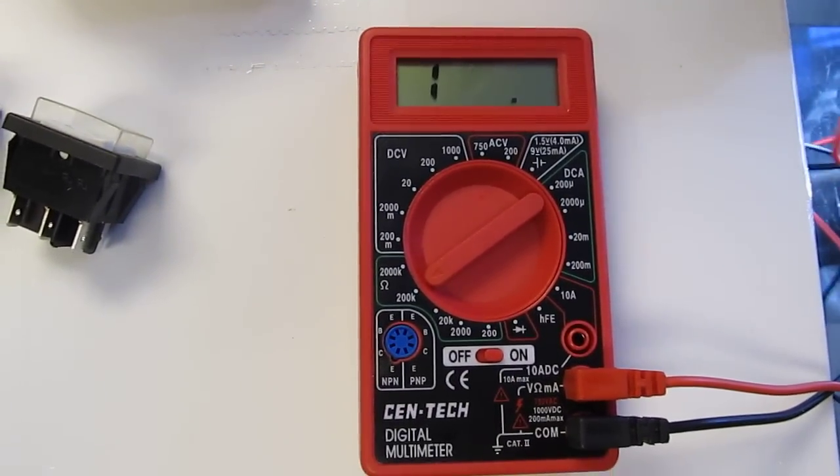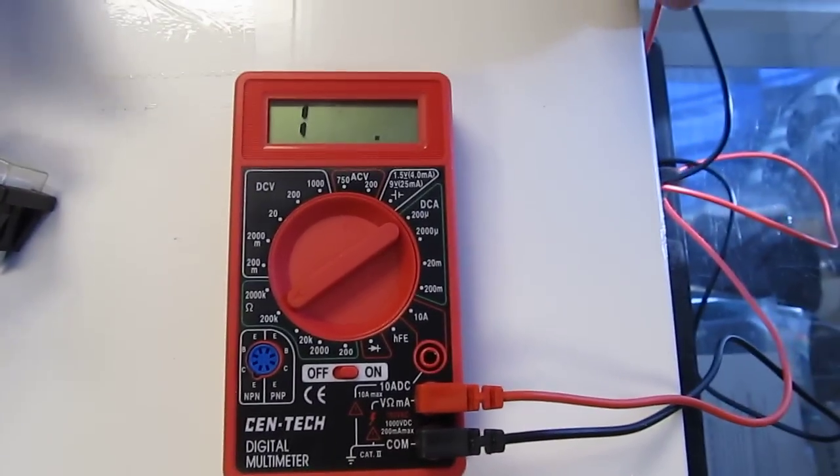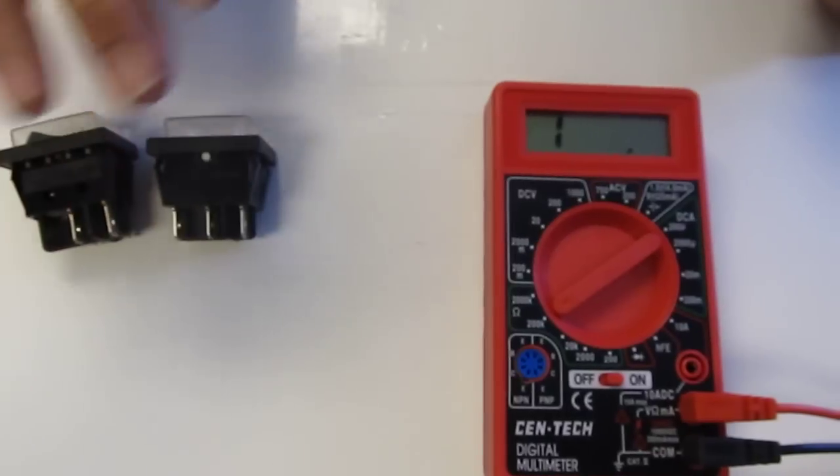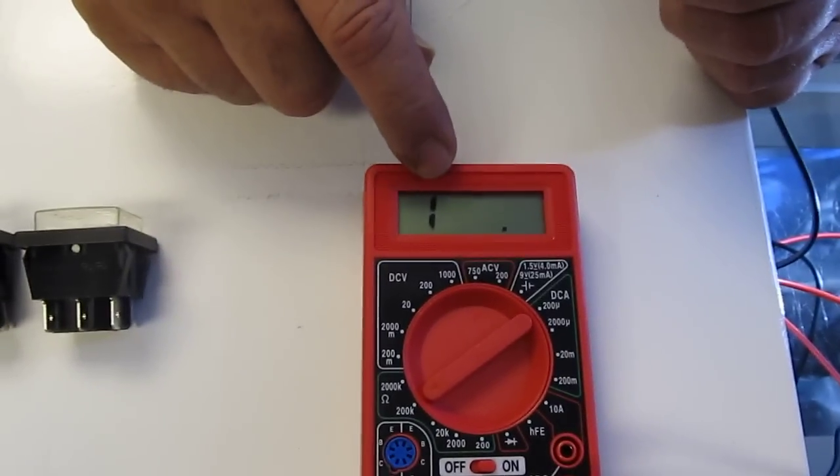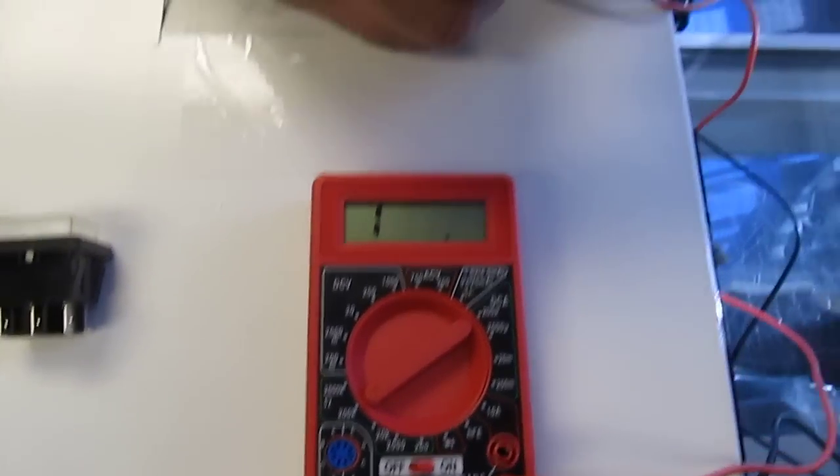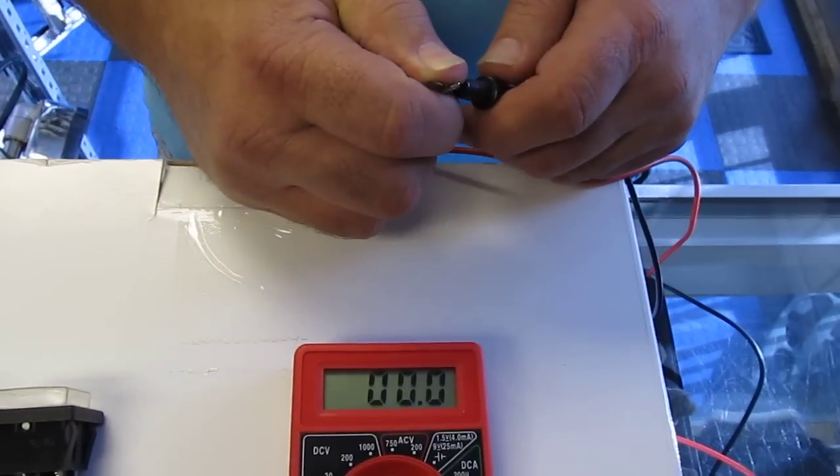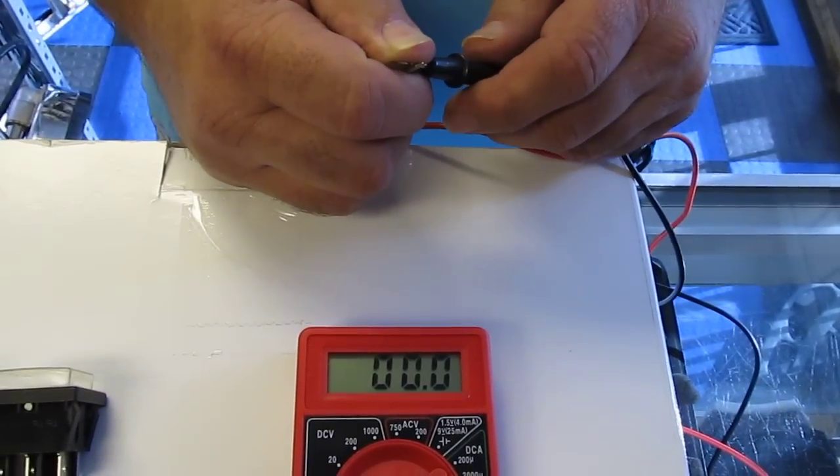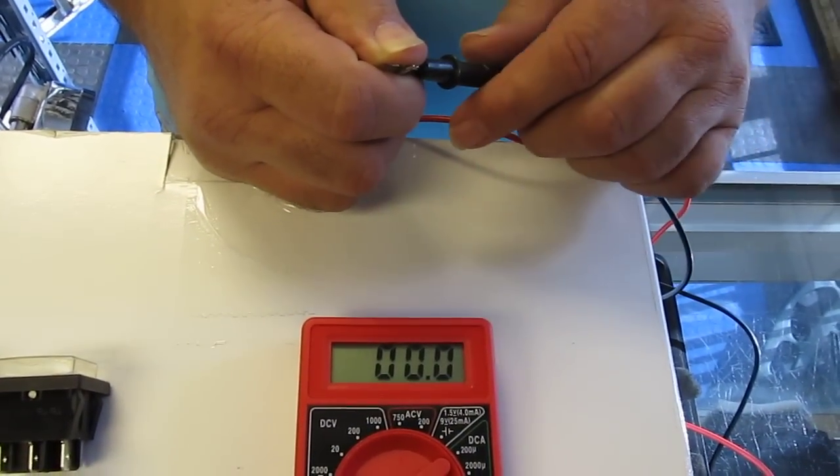When you first turn the digital meter on and you're not touching the wires together or you're testing a switch and it's in the off position, it does show a one on the left side of the display. When you touch the wires together or demonstrate a switch in the on position, you'll get a set of zeros across there.